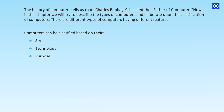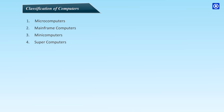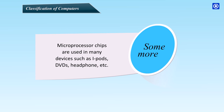Computers can be classified based on their size, technology, and purpose. The classification includes Microcomputers, Mainframe Computers, Mini Computers, and Supercomputers. Microprocessor chips are used in many devices such as iPods, DVDs, headphones, etc.